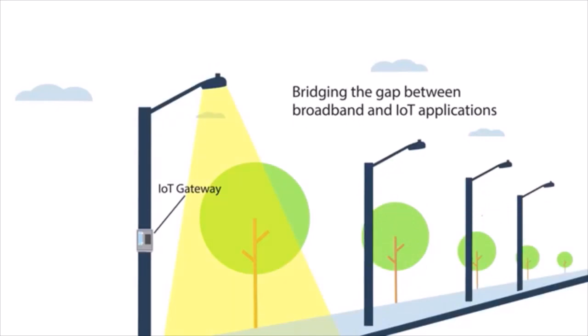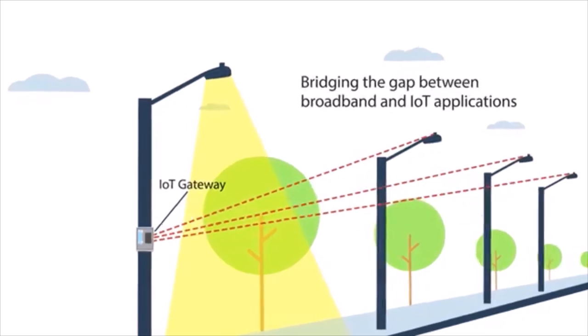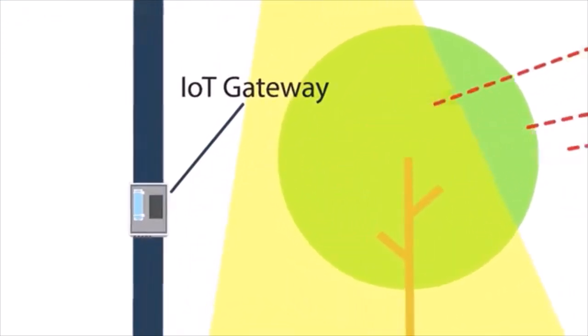Bridging the gap between broadband and IoT applications, SmartNode seamlessly integrates with third-party devices to support IoT applications such as smart lighting, smart metering, traffic management, and agriculture.